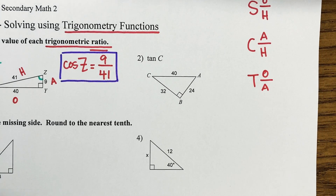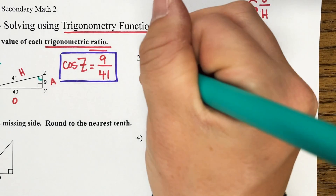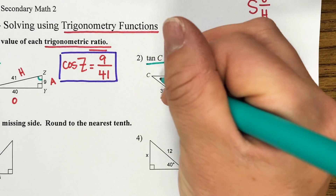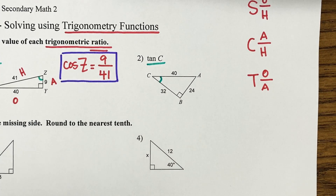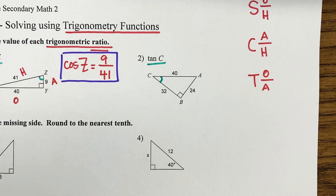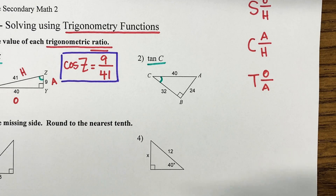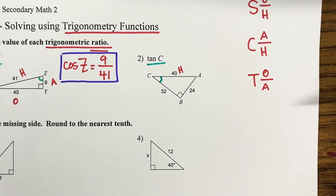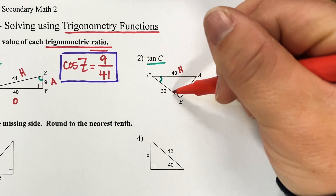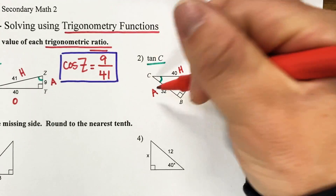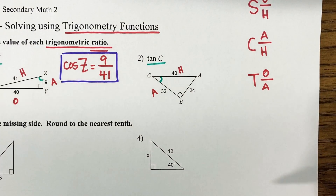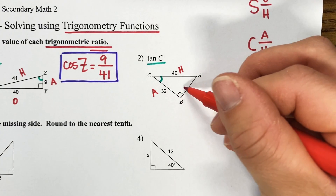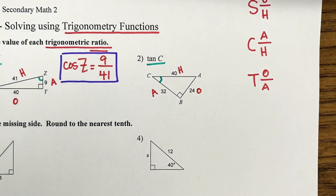Let's look at number 2. It's asking us to find tangent of C. Find angle C — angle C is right there. Now we need to identify the adjacent, the opposite, and the hypotenuse sides. Our hypotenuse is always across from our right angle, so 40 is my hypotenuse. 32 is the side that's touching this angle, so that is my adjacent side. And 24 is on the opposite side of that angle, so that is my opposite side.